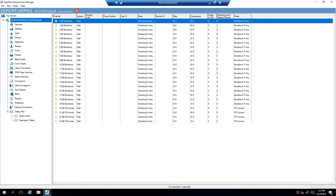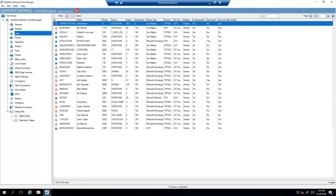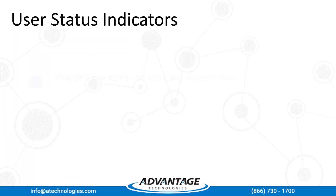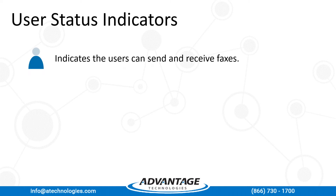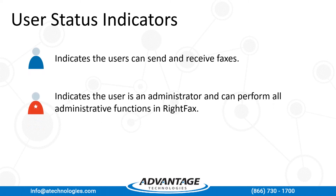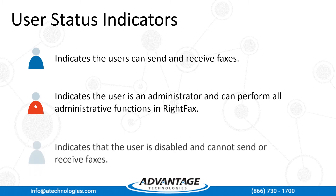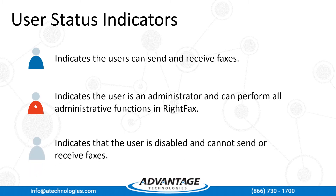First, click Users to see a list of all of your users. Here you can view the current registered users as well as their current status. User icons that are blue indicate the users can send and receive faxes. User icons that are red indicate that the user is an administrator and can perform all administrative functions in WriteFax. Finally, user icons that are grayed out indicate that the user is disabled and cannot send or receive faxes.